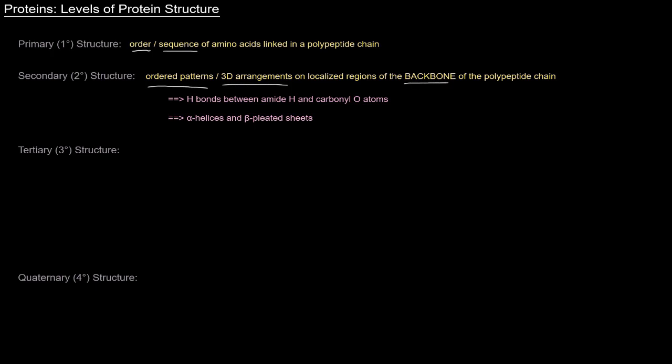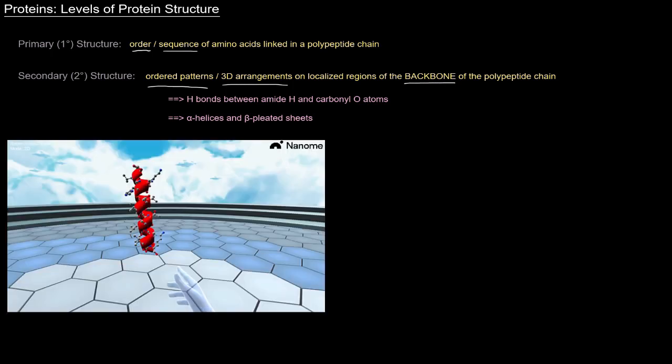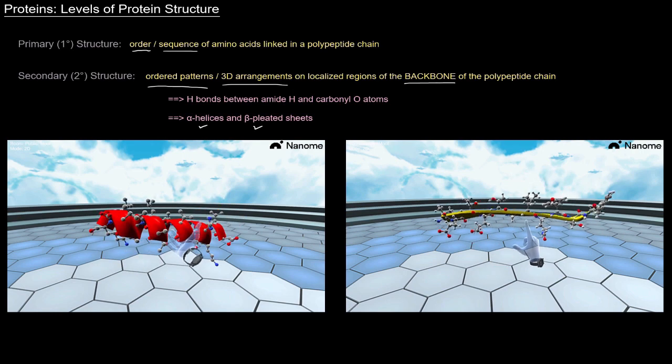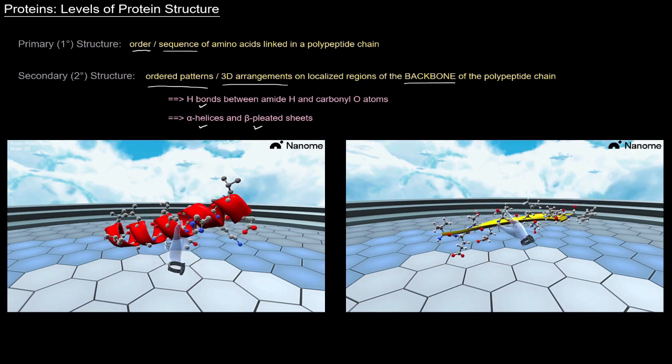You'll notice that backbone here is capitalized. And that's really important because when people think about secondary structure, they typically think about alpha helices and beta pleated sheets. And they're absolutely right to think that. And they also think about hydrogen bonds. Again, absolutely right to think that.